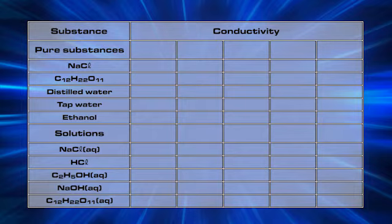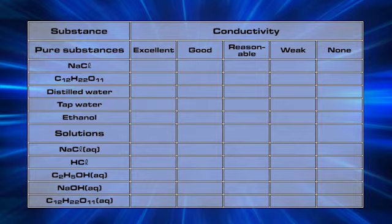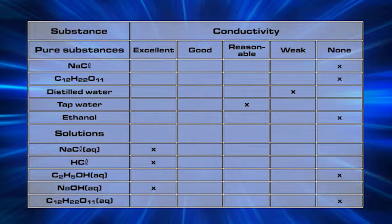Complete the table by indicating whether the conductivity was excellent, good, reasonable or weak, and also indicate if no current was flowing. The solutions of sodium chloride, hydrochloric acid and sodium hydroxide excellently conducted current. Tap water conducted it reasonably while distilled water had weak conductivity. Pure sodium chloride, sugar and ethanol, as well as the solutions of sugar and ethanol, did not conduct any current.